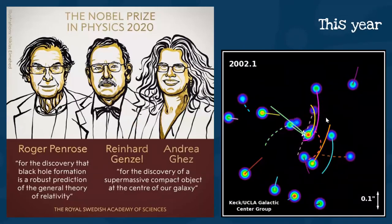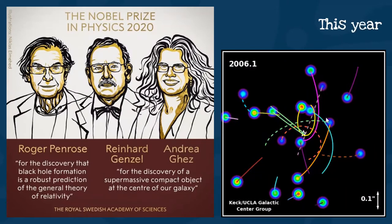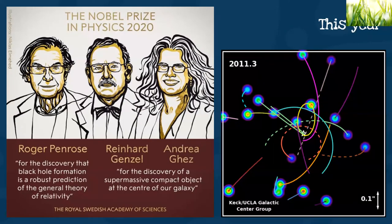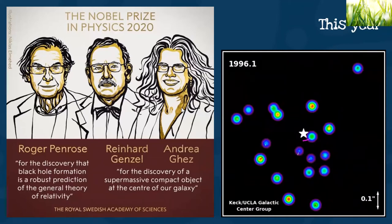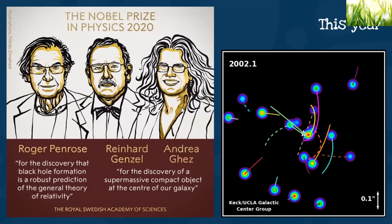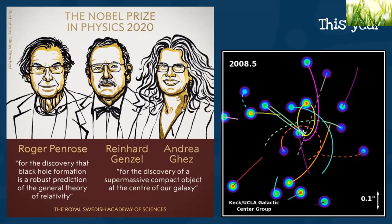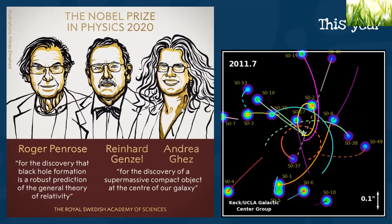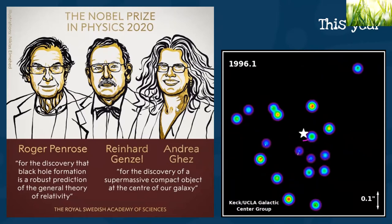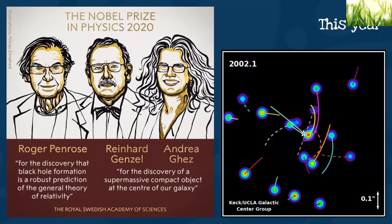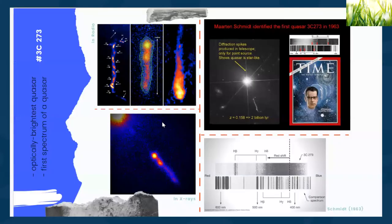Fast forward to October 2020: the Nobel Prize in Physics was jointly awarded to Professor Roger Penrose, Professor Reinhard Genzel, and Professor Andrea Ghez for the discoveries of one of the most exotic phenomena in the universe — the black hole. This was just to give you a standpoint of why black holes are important, but also that this is not a new study; it has been ongoing for more than 60 years.